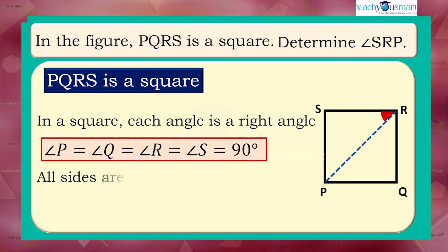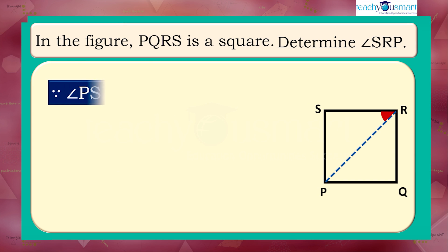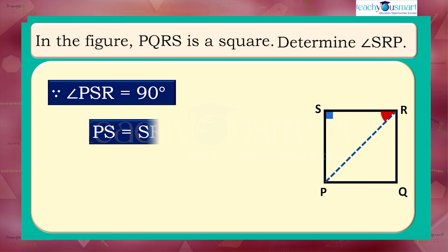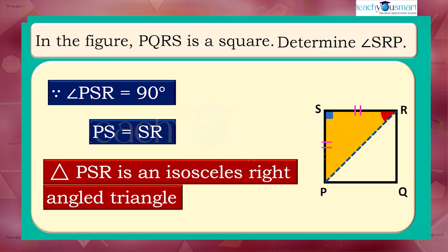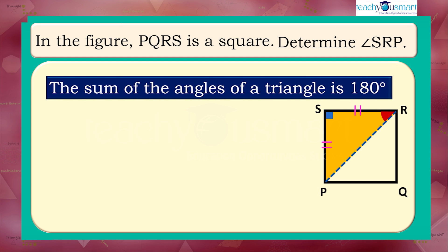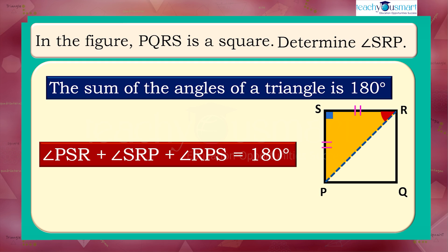And all sides are equal in length. That is, PQ equals QR equals RS equals SP. Since the measure of angle PSR is 90 degrees and PS equals SR, triangle PSR is an isosceles right-angled triangle. We have the sum of the angles of a triangle is 180 degrees. So in triangle PSR, angle PSR plus angle SRP plus angle RPS equals 180 degrees.